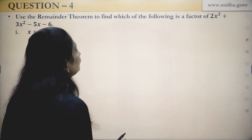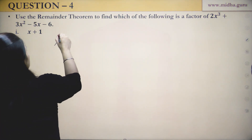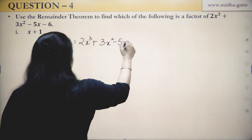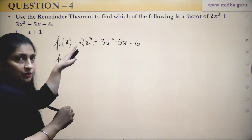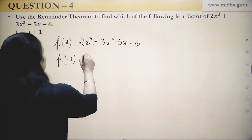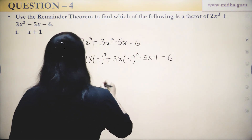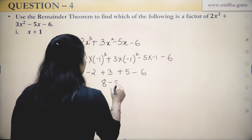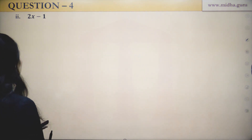Use the Remainder Theorem to find which one of the following is a factor of 2x³ + 3x² − 5x + 6. Check X + 1: equate to 0, X = −1. p(−1) = 2(−1)³ + 3(−1)² − 5(−1) + 6 — wait, it's minus 6. We get −2 + 3 + 5 − 6 = 0. So X + 1 is a factor.